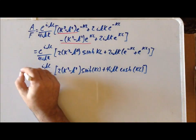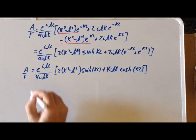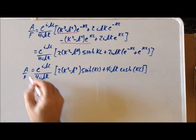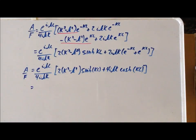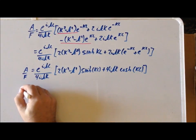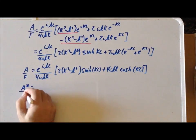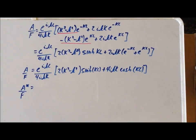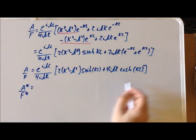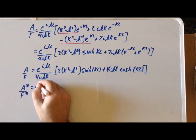We note that now we have an expression for A over F, and we said before that the probabilities are related to A and F. The way they're related is through the complex conjugate. We're really interested in A-star A and F-star F, so to help us towards that, let's find the complex conjugate of the ratio A to F — that is, A-star over F-star — and we find the complex conjugate of this expression by replacing every i by a minus i.